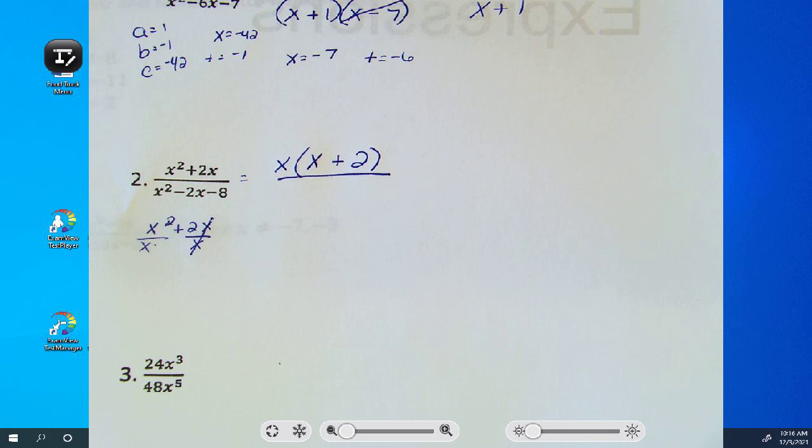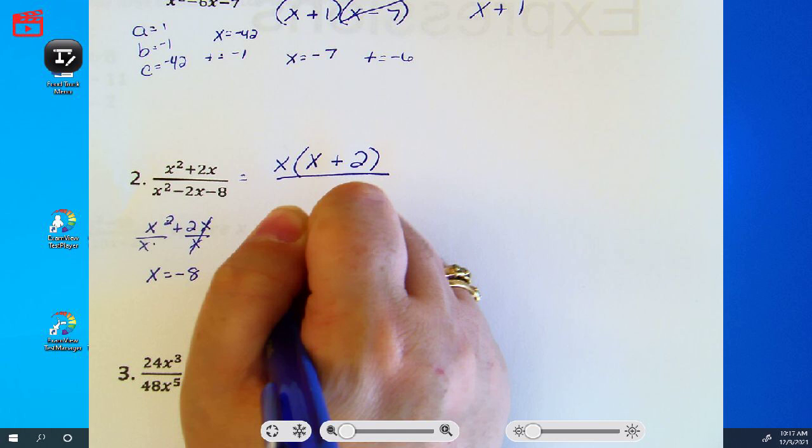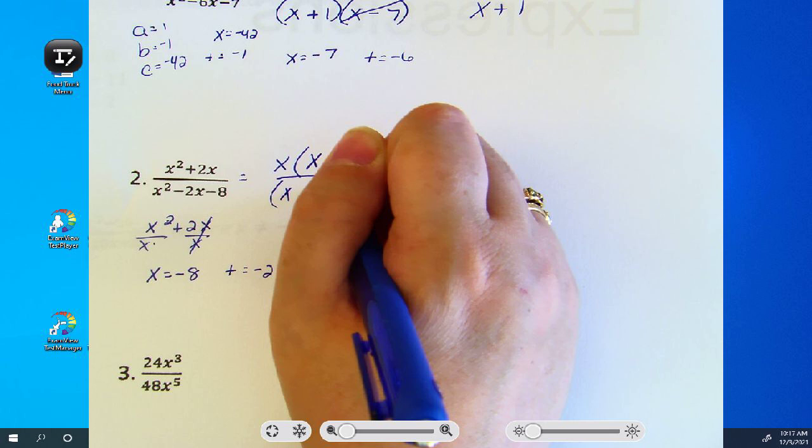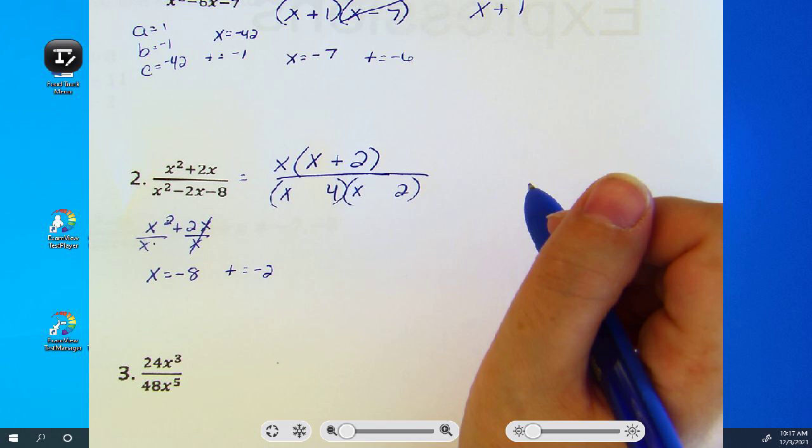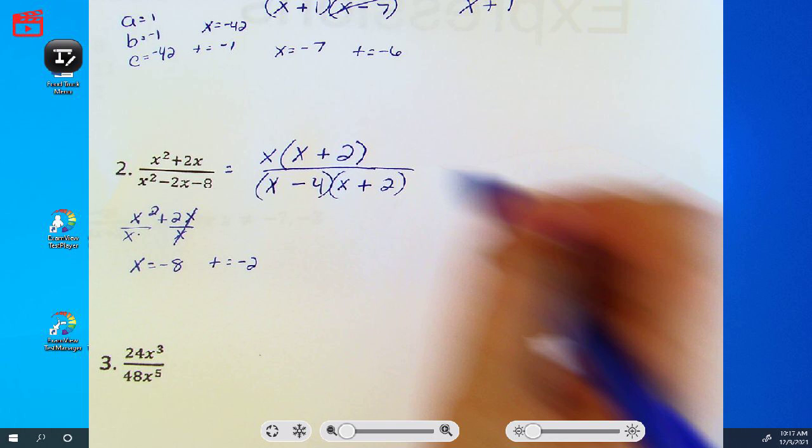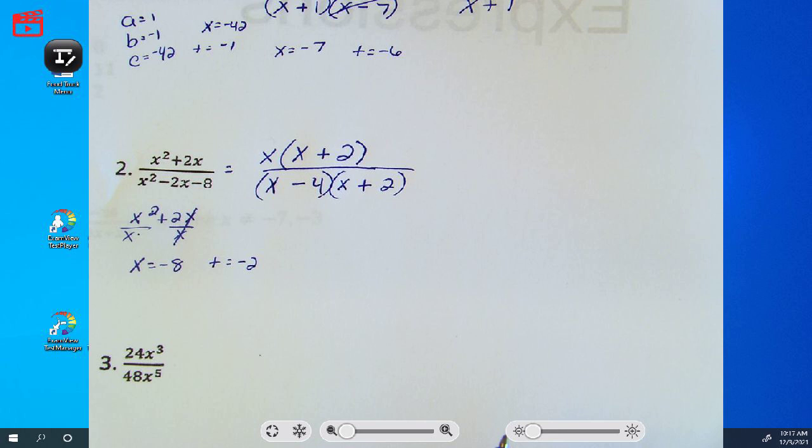In the denominator, is there a GCF? No. Is there 2 or 3 terms? That's right. So what can I multiply to get negative 8, add to get negative 2? Which one has to be negative? The 4, yes. What do you see that is in common in the numerator and the denominator? x plus 2.